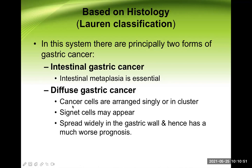In diffuse gastric cancer, even signet ring cells may appear. The signet ring cell has its nucleus pushed towards the peripheral area with a lot of mucin collected in the cytoplasm — it almost looks like a ring on a finger, which is why we call it signet ring appearance. This diffuse gastric cancer spreads widely in the gastric wall and hence has a much worse prognosis.